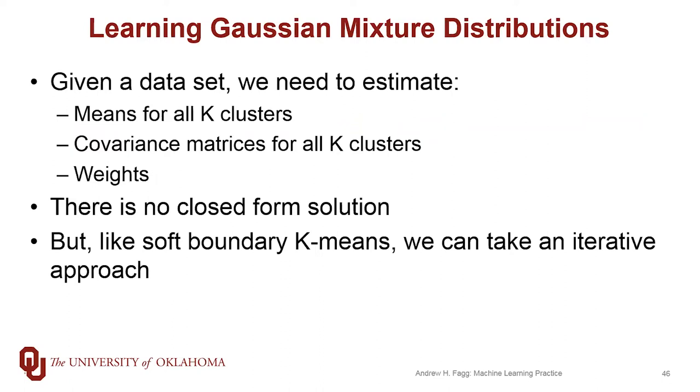As with everything else we've been doing with unsupervised learning methods, we're given a set of points in some feature space. We need to estimate the means for each of our Gaussians, which are going to define our clusters, the covariance matrices for the clusters, and then the weighting of the different clusters.